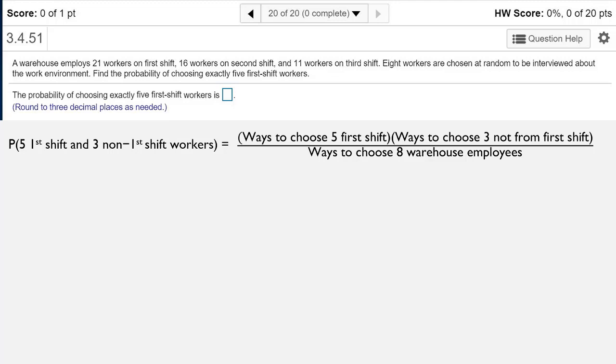So how do we do that? Well, there's 21 workers on the first shift and we're choosing five, so that would be 21 C 5. There are 16 workers on the second shift and 11 workers on the third shift. That means there's 27 workers that aren't on the first shift. So for the second part it would be 27 C 3. And then the number of ways that we could choose eight warehouse employees would be 48 C 8.